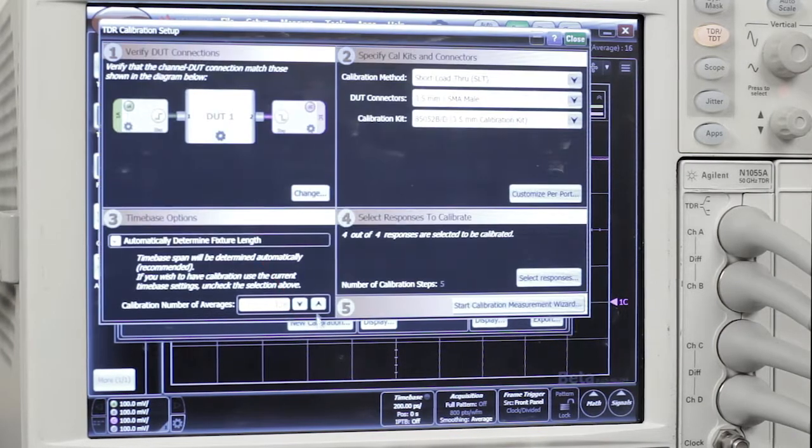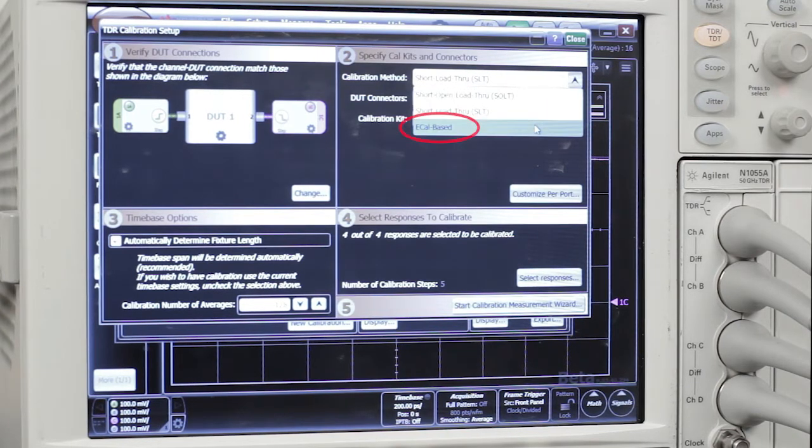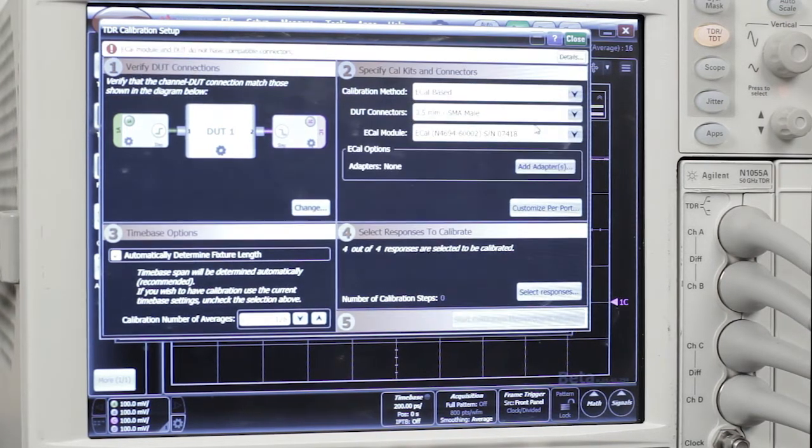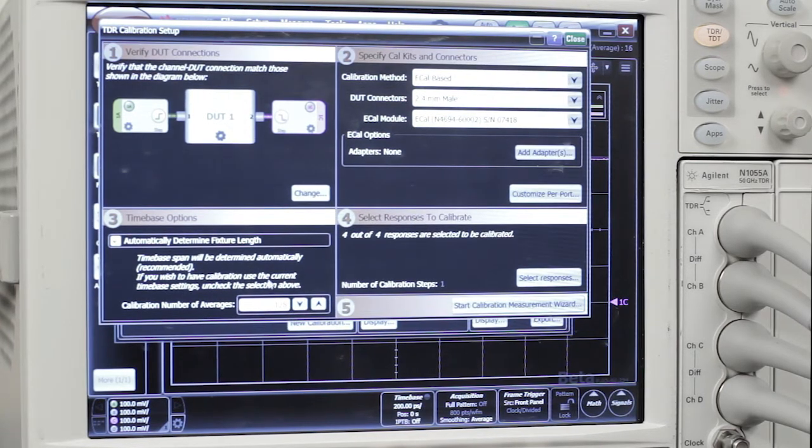So we can select a new calibration. There's several steps here. The first one is to just confirm the setup is what you want, and it is. Then you have a choice on the type of calibration you're going to do. Today we're going to do ECAL, so we select that. We have to answer some questions about the type of connectors on our DUT, and we have 2.4 millimeter males. We set up the averaging we want, and that's good, and then we can start the calibration measurement wizard.